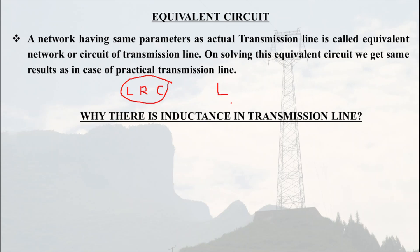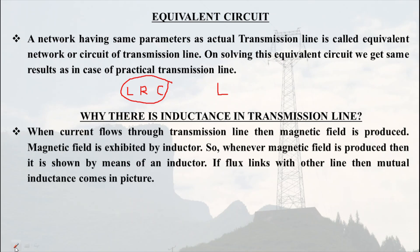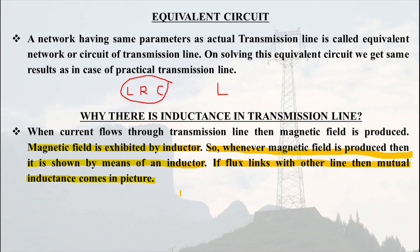The question arises: why is there inductance in a transmission line? When current flows through a transmission line, a magnetic field is produced. We know that a magnetic field is exhibited by an inductor, so whenever a magnetic field is produced it is shown by means of an inductor. If the field links with some other line, then mutual inductance comes into picture. In this way, inductance is present in the transmission line.